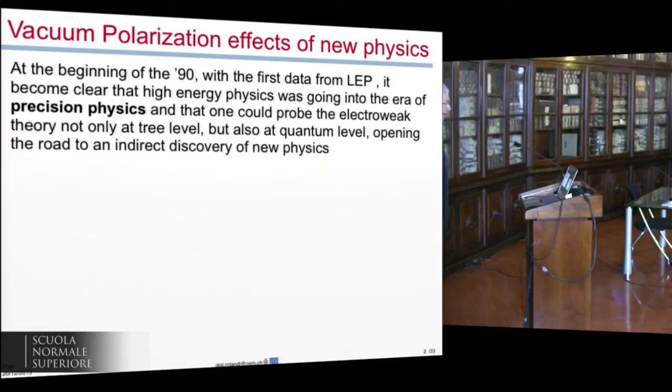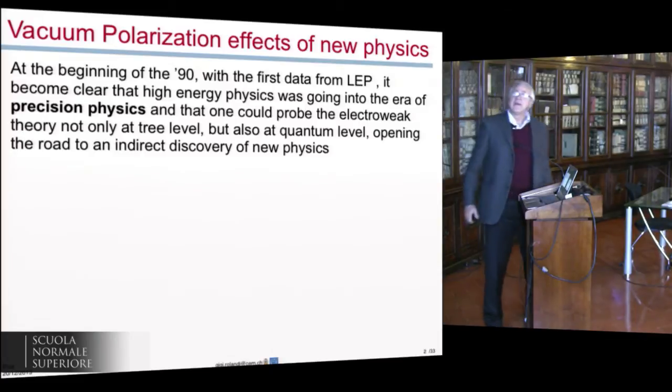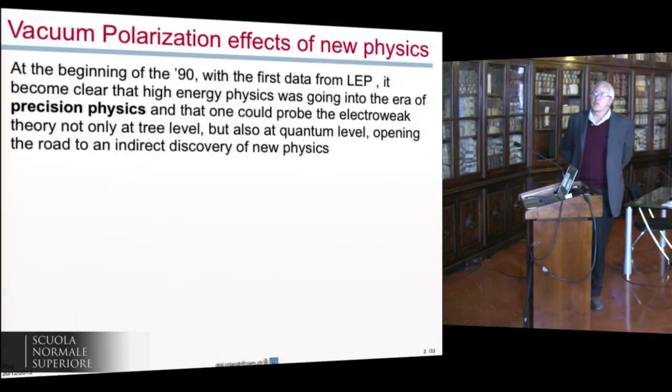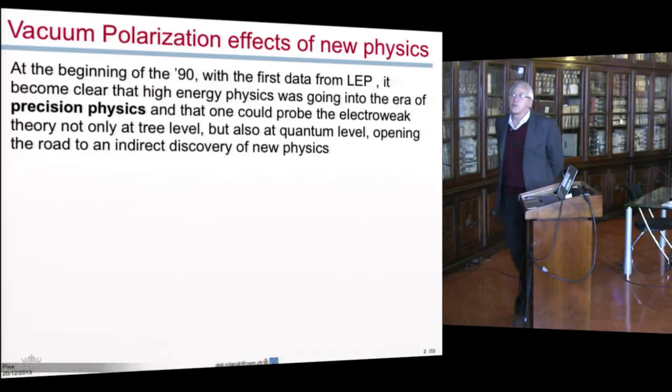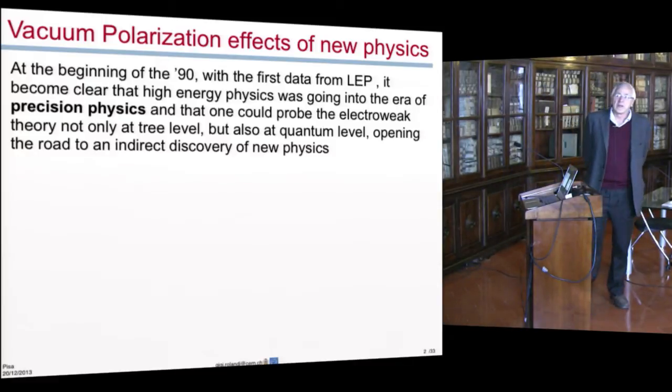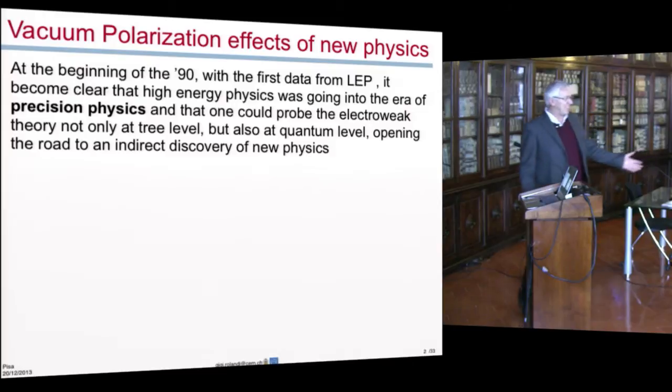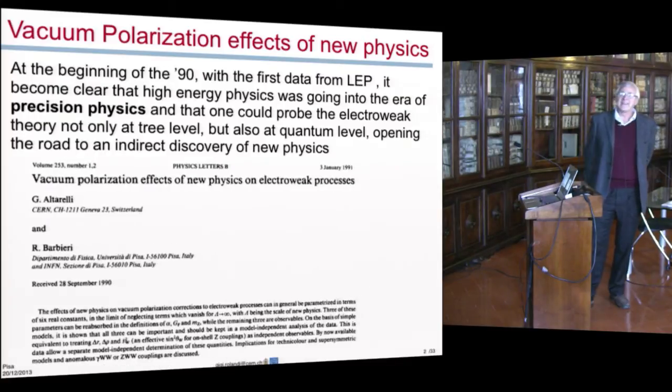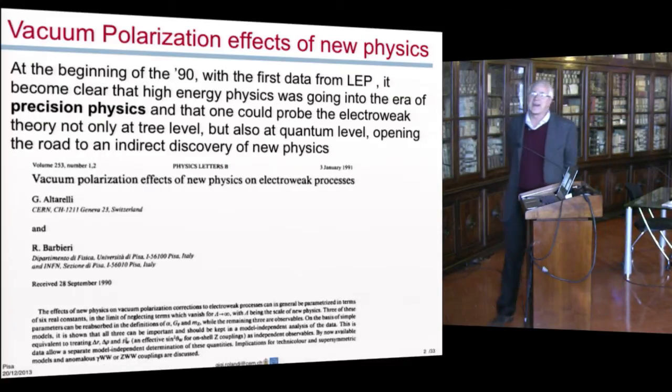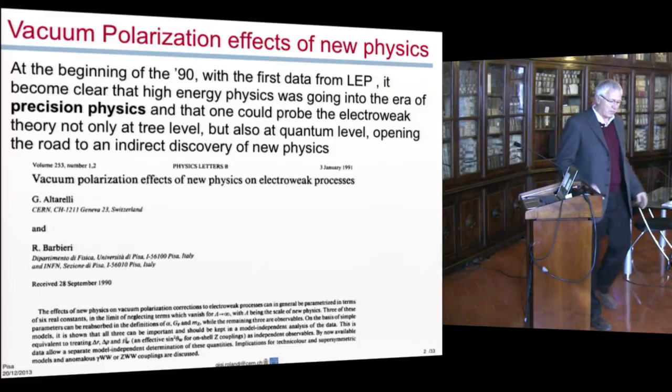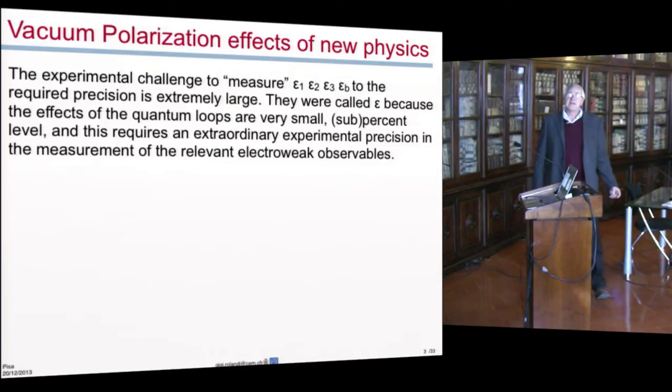This starts from far. At the beginning of the 90s, when we got the first data from LEP, it became clear that high-energy physics was going into the era of precision physics, that one could probe electroweak theory not only at tree level but also at quantum level, opening the road to an indirect discovery of new physics. There was a paper appearing in 91 by Guido and Riccardo, vacuum polarization effects of new physics on electroweak processes. That was a seminal paper that paved the road on interpretation of the electroweak precision data.